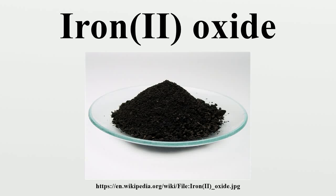Iron oxide is the inorganic compound with the formula FeO. Its mineral form is known as wüstite, one of several iron oxides. It is a black-colored powder that is sometimes confused with rust, which consists of hydrated iron oxide. Iron oxide also refers to a family of related non-stoichiometric compounds, which are typically iron-deficient with compositions ranging from Fe₀.₈₄O to Fe₀.₉₅O.